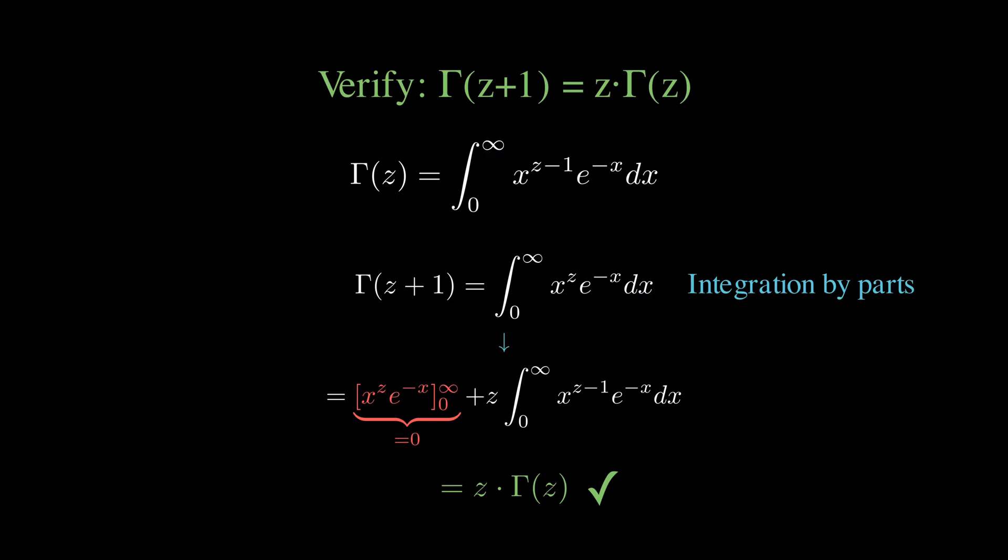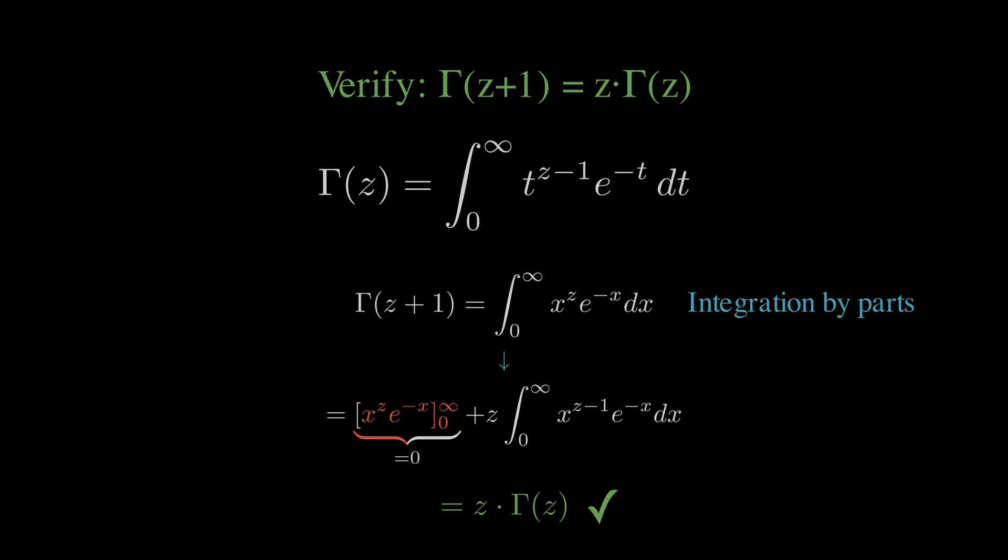So our function really does extend the factorial in the most natural way possible. The gamma function shows up everywhere in mathematics and physics from probability distributions to quantum mechanics. And now you know why. It's the unique smooth extension of the factorial function that preserves its most important property.